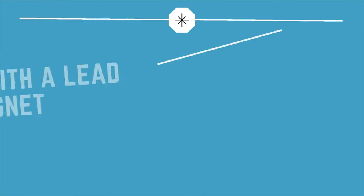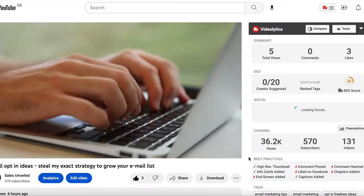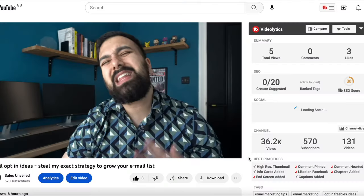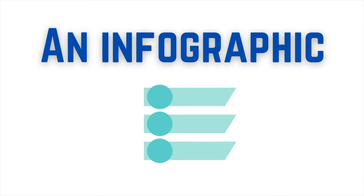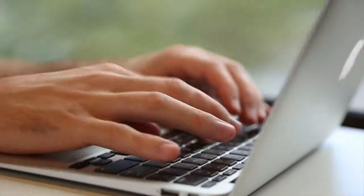Step number one is just to come up with a lead magnet. I've gone into a fair bit of detail about what a lead magnet actually is in last week's video, but just to summarize very quickly: a lead magnet is basically a cheat sheet, an ebook, an infographic, whatever it might be — something that you put on your website that will entice people to give you their email address, usually solving a quick problem that they might be having.